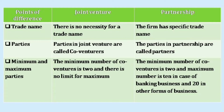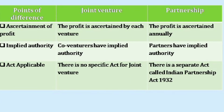In a joint venture, the minimum number of co-venturers is two and there is no limit for maximum. Whereas in case of a partnership firm, the minimum number is two, the maximum number is 10 in case of banking business and 20 in other forms of business. The fourth difference is ascertainment of profits.